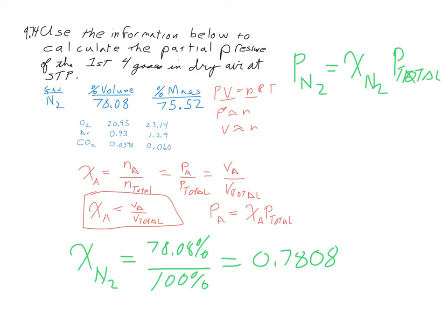Well, the problem told us that we're at STP, which means we have a total pressure of 1 ATM. STP equals 1 ATM. So the partial pressure of my nitrogen is going to be my mole fraction times my pressure total. Grab your calculator there to work that one out.